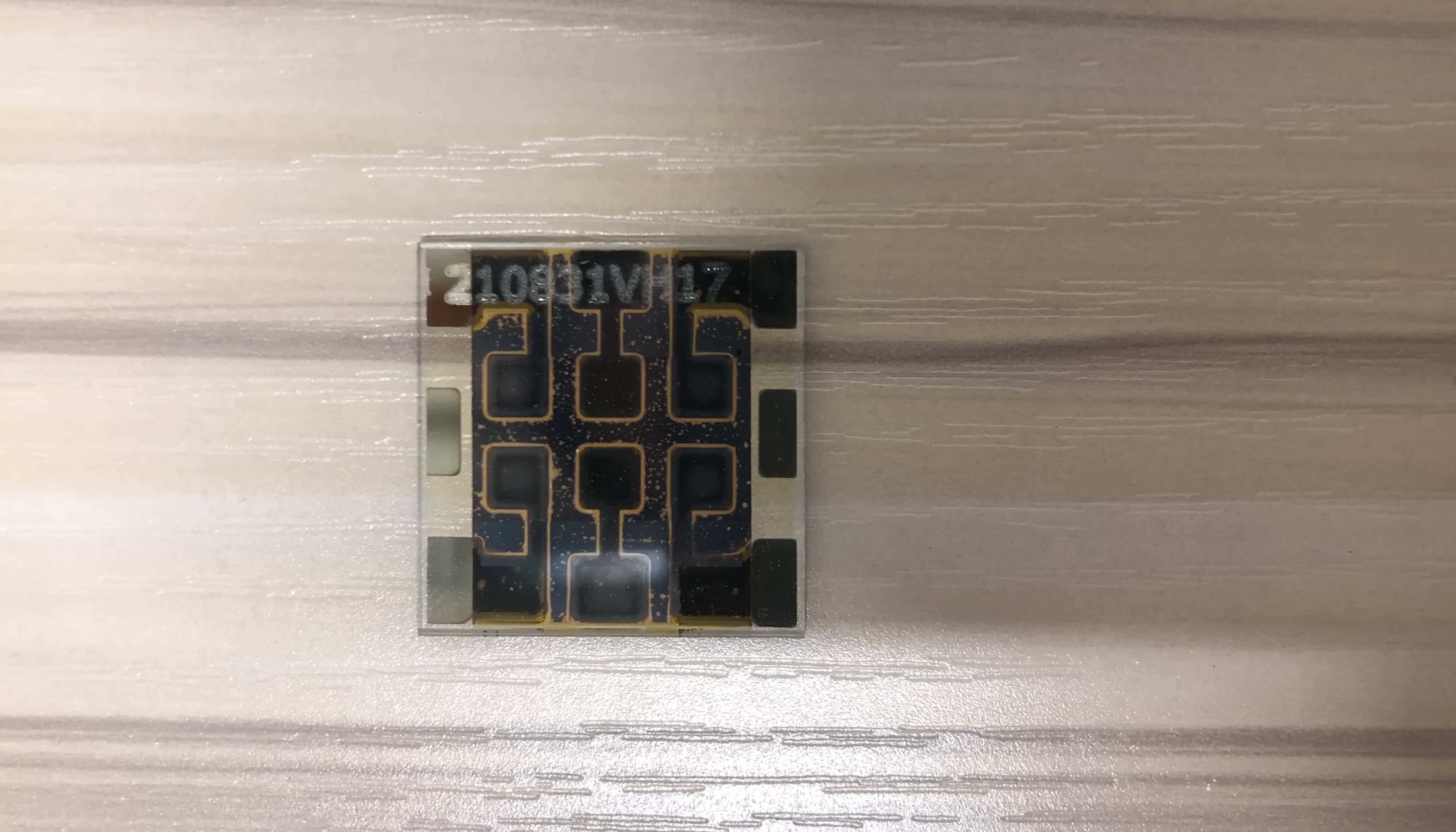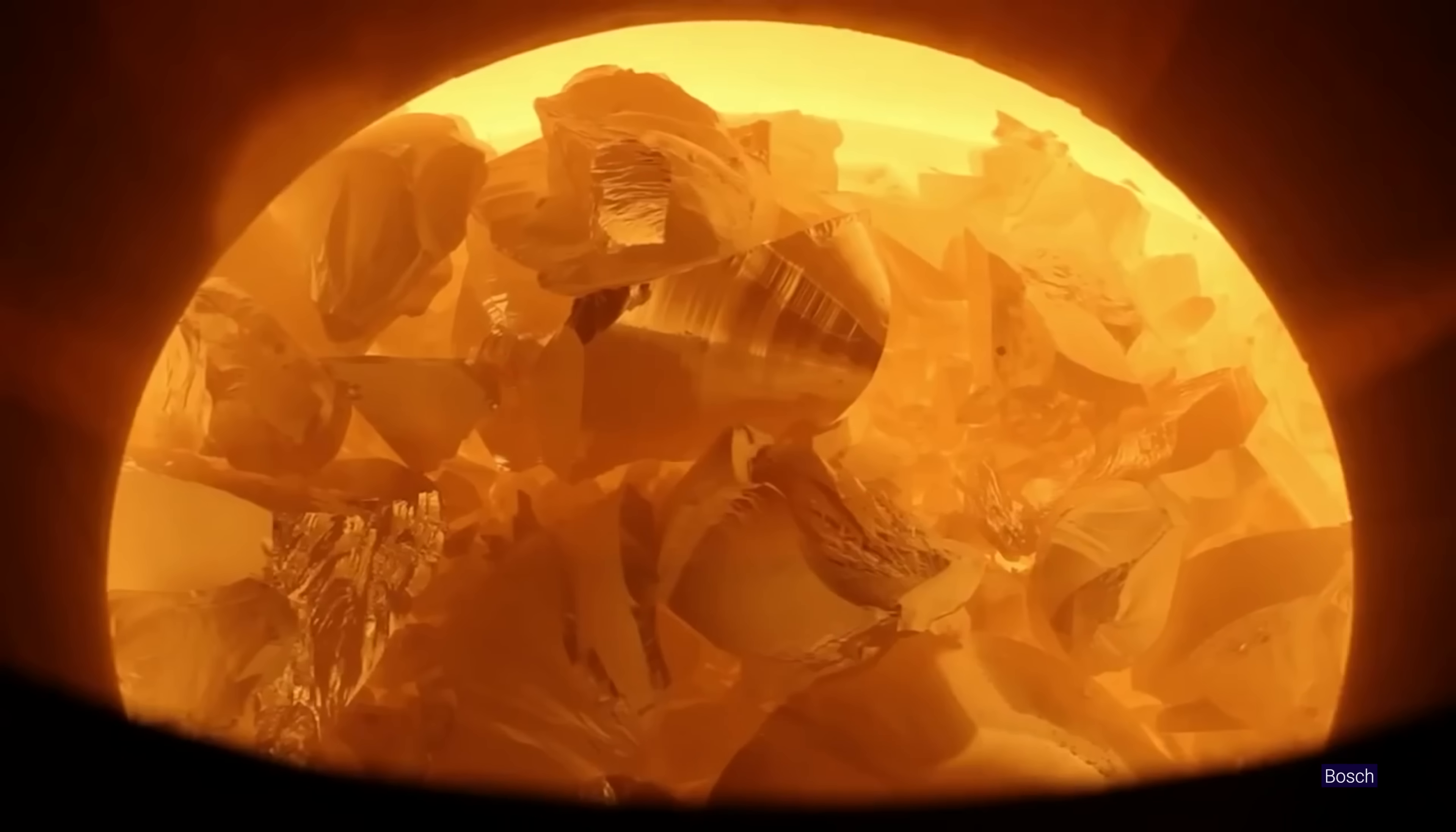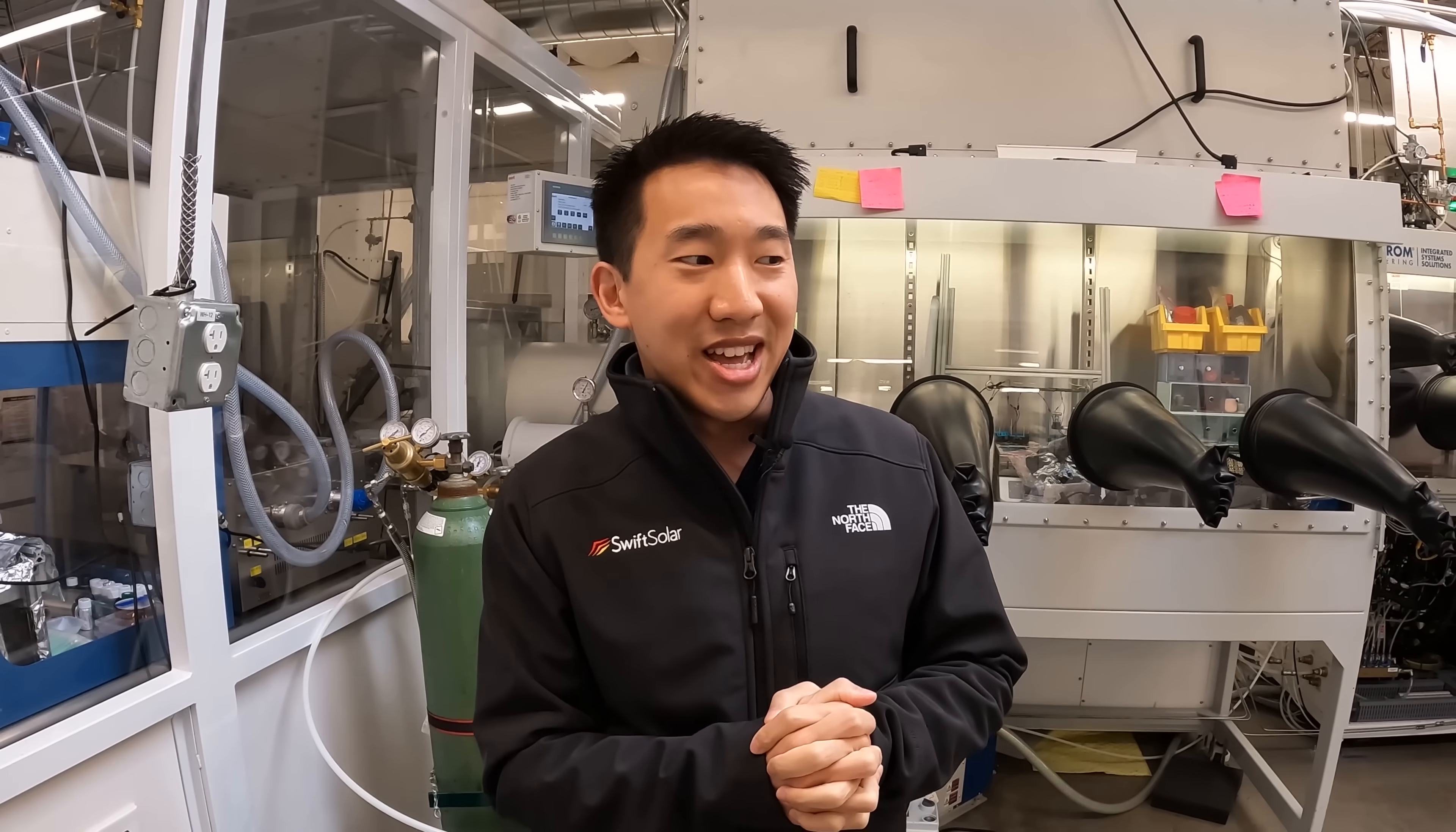The cool thing about the perovskites is that they turn out, even though it's made of this kind of not perfect material, you can actually make a very efficient solar cell. It's formed at low temperatures. Silicon usually you have to crystallize at something like 1400 degrees Celsius. With perovskites you can form it at less than 100 degrees Celsius.